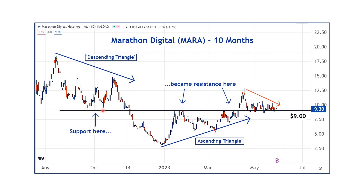Now, why would a level that was support convert into resistance? Why would a level that's resistance convert into support? This has to do with psychology. Support levels can become resistance because of buyer's remorse. There are people who bought here who regret doing so when the price went lower, and they tell themselves, I made a mistake. I want to get out, but I don't want to lose any money. So I'm going to wait for the price to get back to where I paid, and then I'm going to sell so I get out at break even.